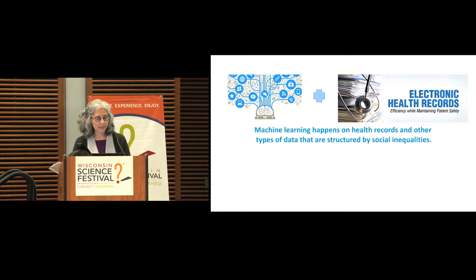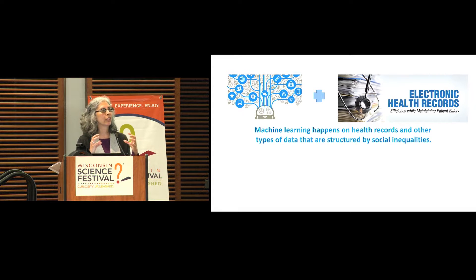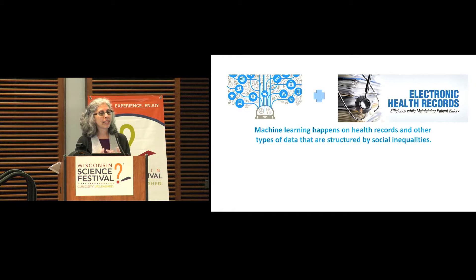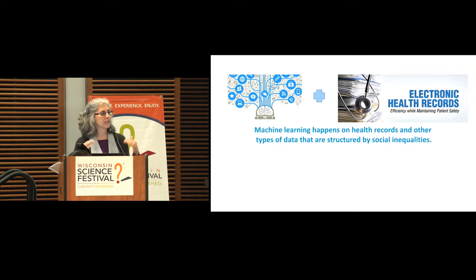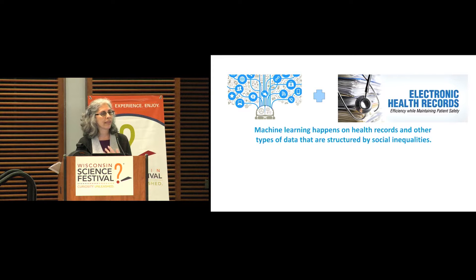So what might be the problems there? First of all, the machine is learning not on carefully curated data developed for a machine learning algorithm, but on data from the real world. Data from the real world, particularly something like healthcare records, incorporate all kinds of social biases — those biases are effectively built in. We have a lot of data from the early 2000s showing that women and men who have heart disease are not diagnosed similarly; women are diagnosed much later than men are.